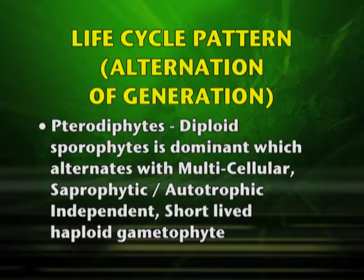We have seen how plants — starting from algae, bryophytes, pteridophytes, gymnosperms, and angiosperms — vary and follow a definite life cycle pattern referred to as alternation of generation. In some we find the dominant gametophyte, whereas in some we find the dominant sporophyte. The plant kingdom shows a variety of forms. In the next episode, we will be discussing the animal kingdom under the unit diversity in the living world.